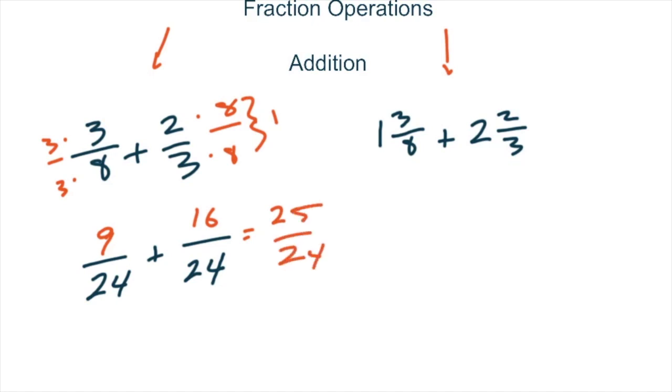Well, we want our answers in simplest form. So we know that out of 25 right here, we can get one group of 24ths. So we would have 1 with 1 left over to get that to be 24ths.